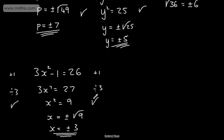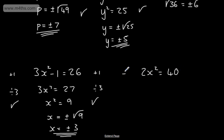Now, these have all worked out to be nice integer or whole number answers, but that's not always going to be the case. For example, if we had 2x squared equal to 40, we would divide both sides by 2, giving us x squared equal to 20.